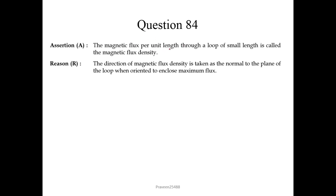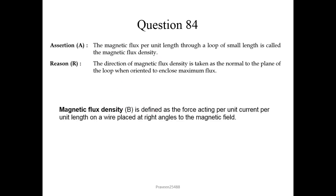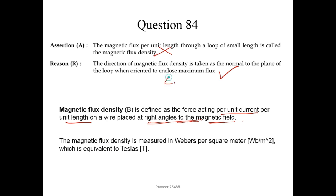Question 84. Assertion: the magnitude of flux per unit length through a loop of small length is called magnetic flux density. There is an error here. The correct definition is: magnetic flux density is defined as the force acting per unit current per unit length on a wire placed at right angles to the magnetic field. So assertion is wrong. The reason — the direction of magnetic flux density is taken as the normal to the plane of the loop when oriented to enclose maximum flux — is correct. So we choose option 4. Note: magnetic flux density is measured in Webers per square meter, equivalent to Tesla.